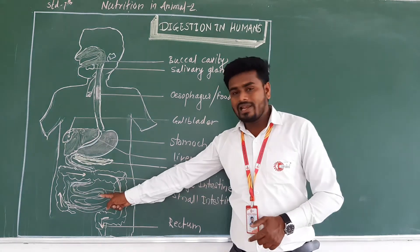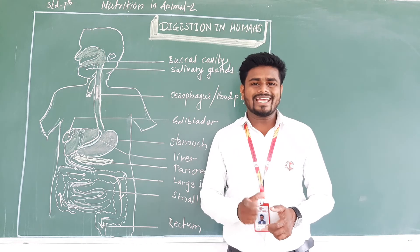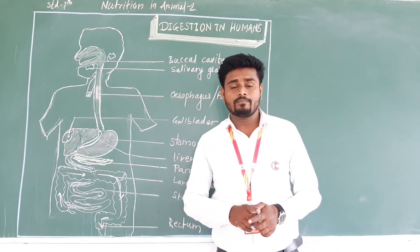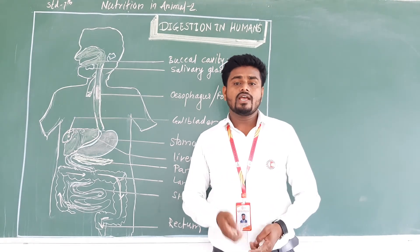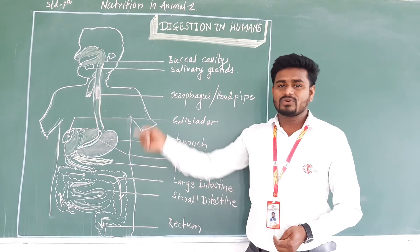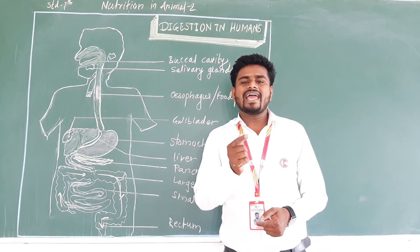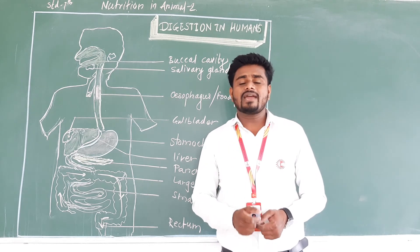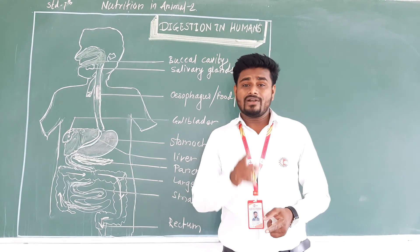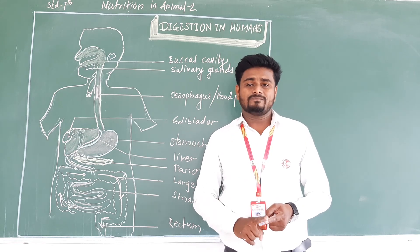The small intestine is the longest part of the alimentary canal, which is seven and a half meters long. In this way the process of digestion takes place in the human body. For more such videos, please like and subscribe to Gurukul English Medium Schools YouTube channel and don't forget to press the bell icon. Thank you.